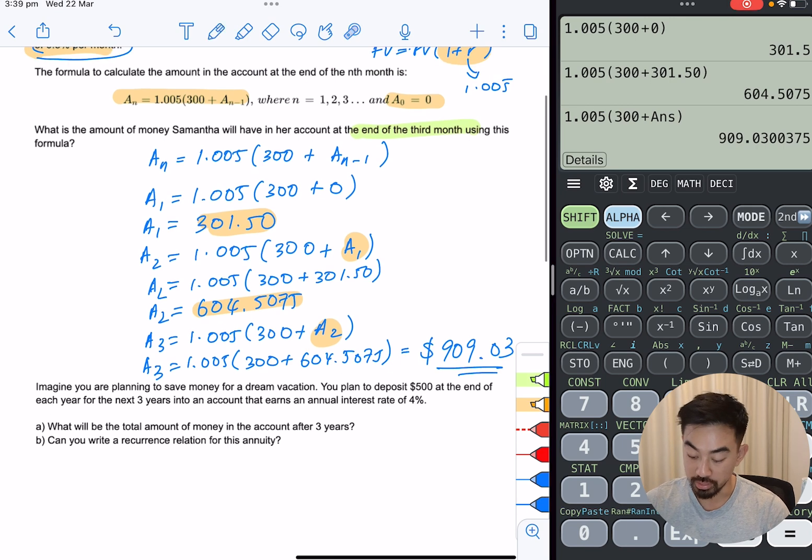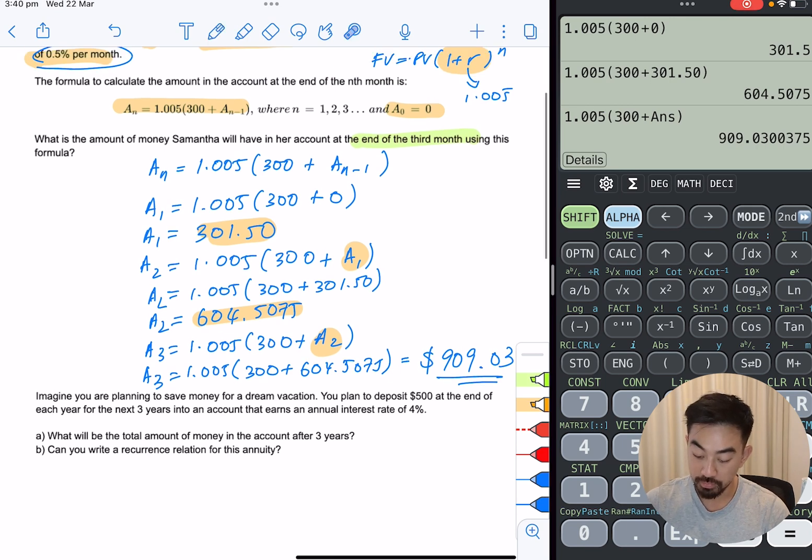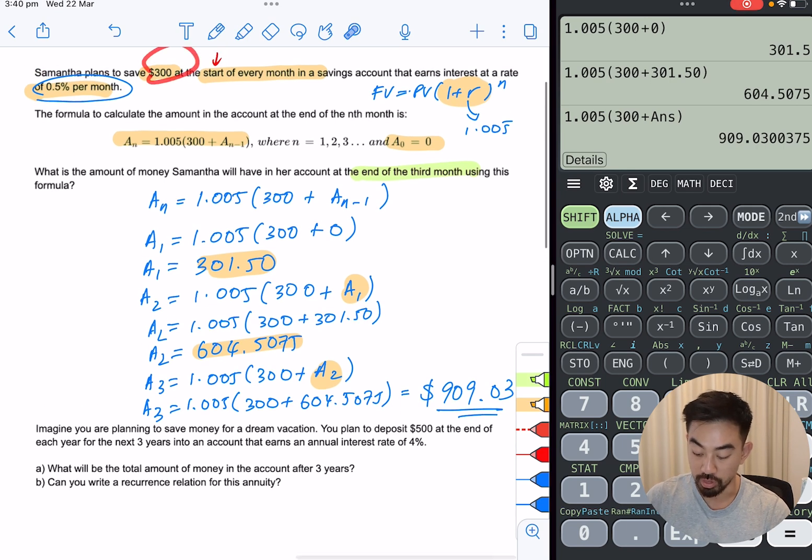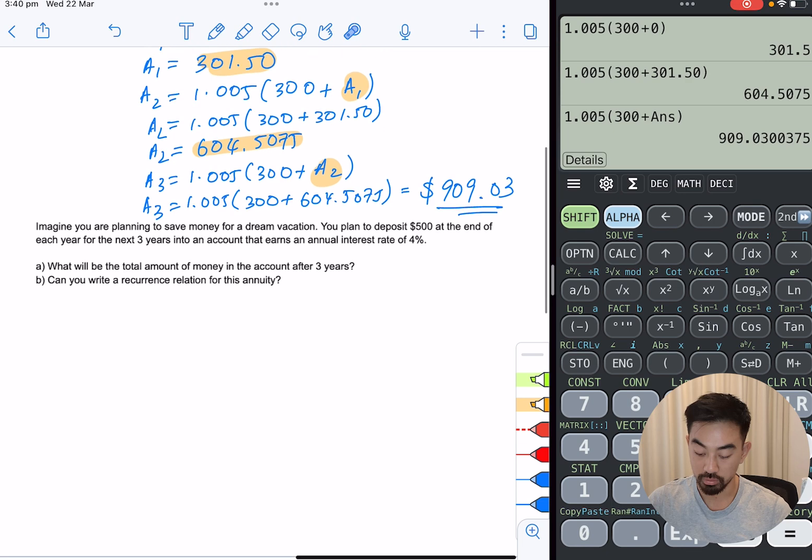So if we quickly just look at this, she's put in $300 every month for three months. So in total, she's put in $900. So that means the extra, the $9.03 is the interest. Right, cool. Next example.